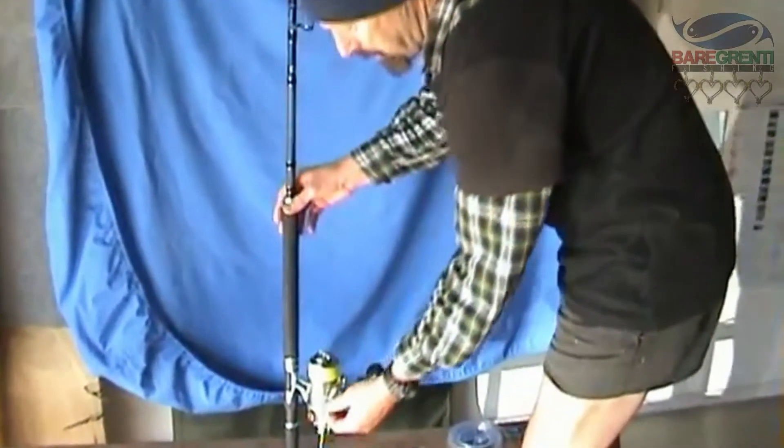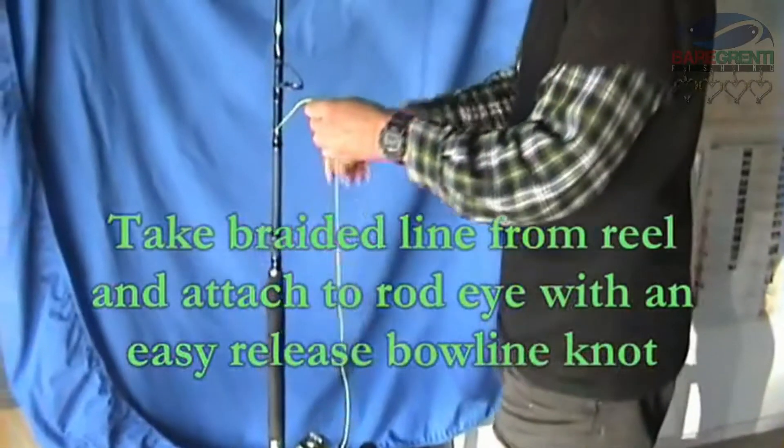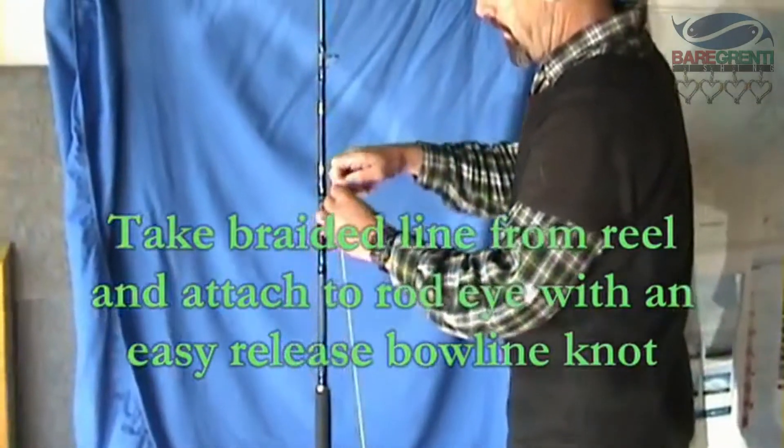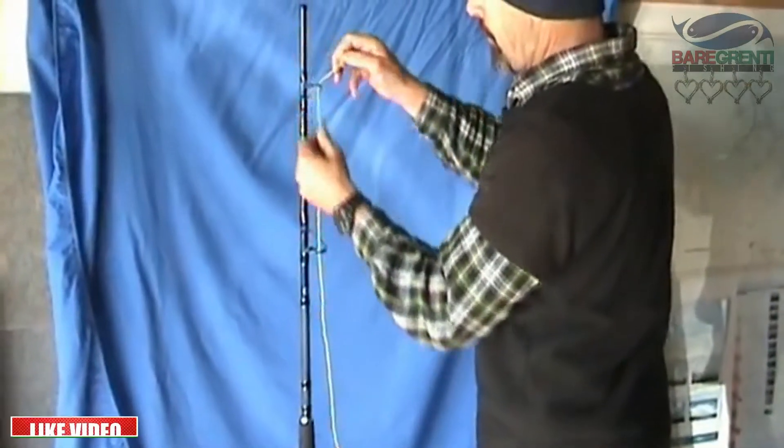For the purpose of this demonstration I'll put a bit of braid string on the reel. This is a technique for doing the FG knot which you can easily do in the rod hold of a boat.